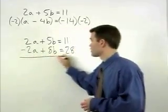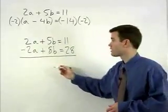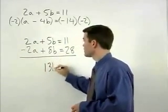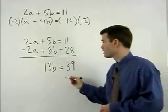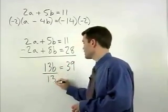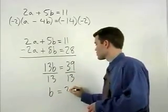Now when we add our two equations together, our a terms will cancel out. And we're left with 13b equals 39. Dividing both sides by 13, b equals 3.